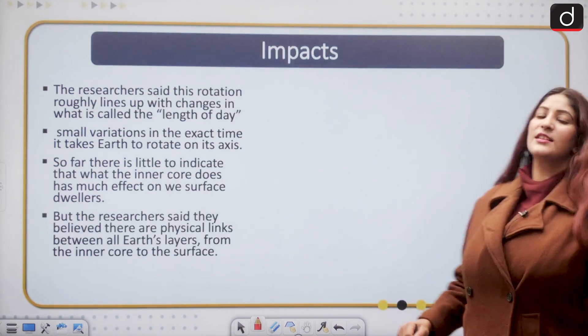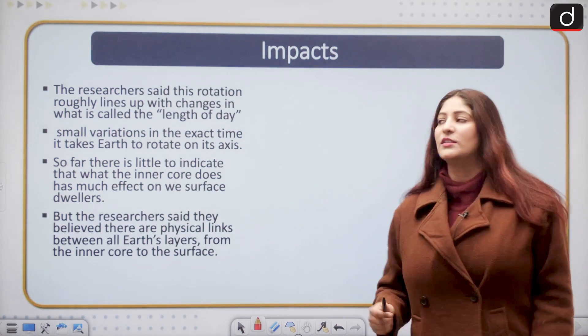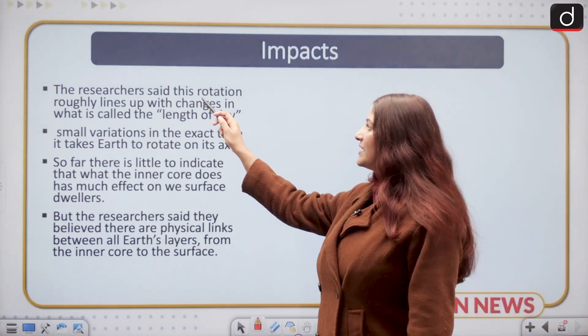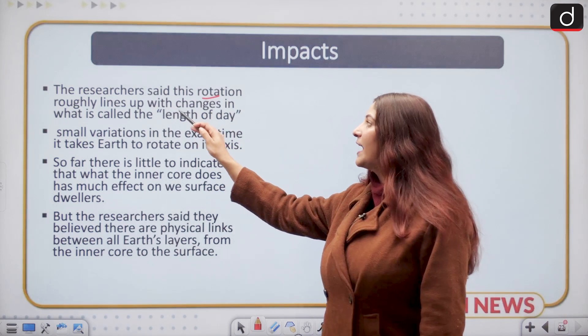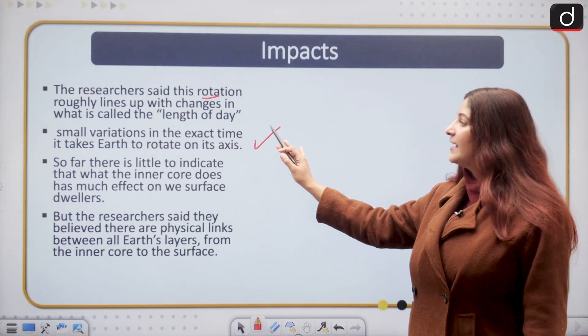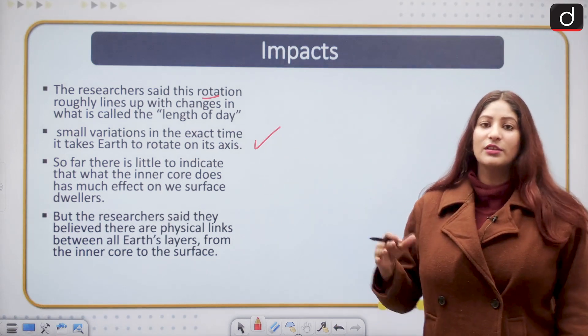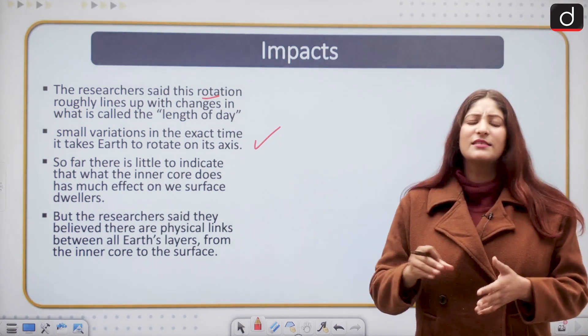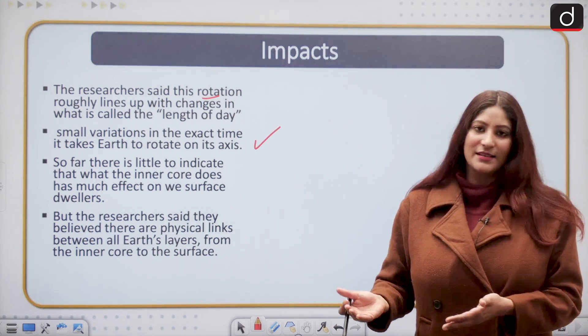The impacts are not much for us, the dwellers of the earth. But the researchers said that this rotation roughly lines up with the change in what is called the length of day, because of small variations in the exact time it takes for earth to rotate on its axis. This is just a coincidence.